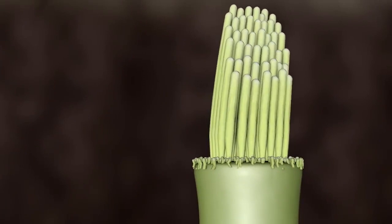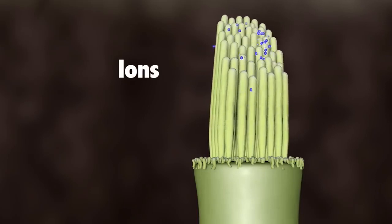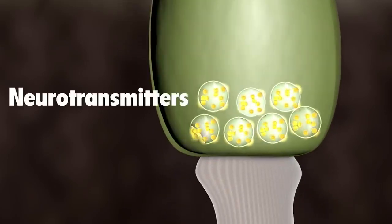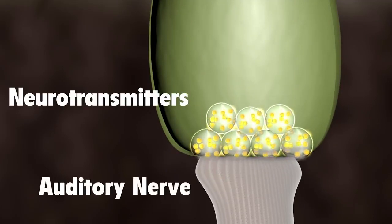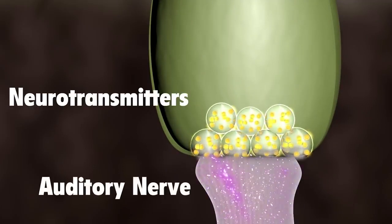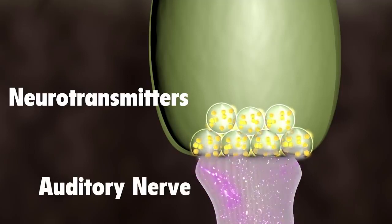As the hair bundles are moved, ions rush into the top of the hair cells, causing the release of chemicals at the bottom of the hair cells. The chemicals bind to the auditory nerve cells and create an electrical signal, which travels along the auditory nerve to the brain.